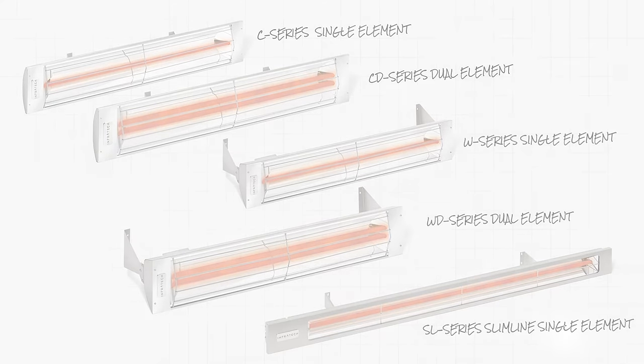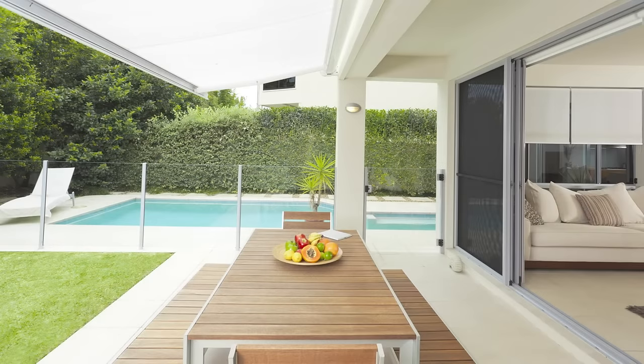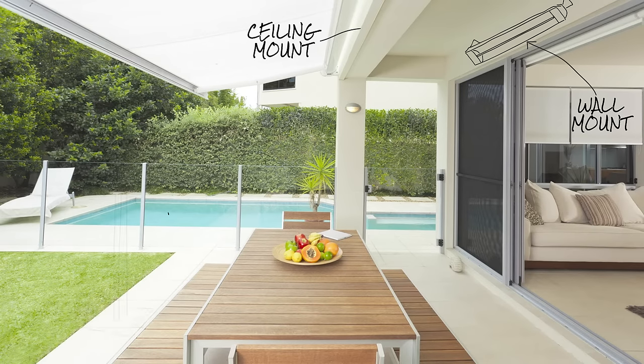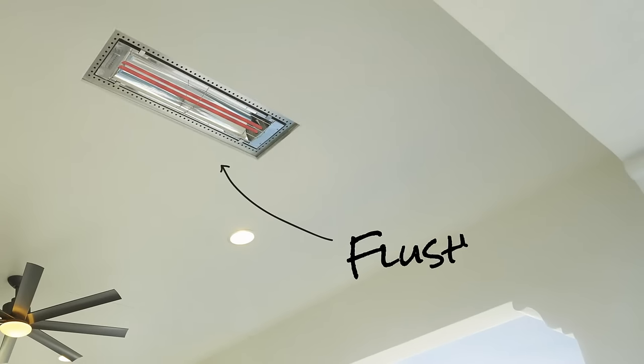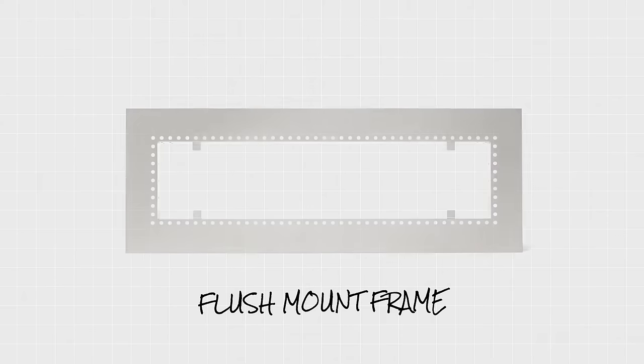For mounting, Infratech heaters come with 6-inch brackets to meet clearance requirements and can be mounted to a wall, ceiling, or pole. All C, CD, W, and WD Series Heaters are compatible with our ever-popular flush mount application. To flush mount an Infratech heater, you must also order a flush mount frame, which is an additional accessory to the heaters that is sold separately.